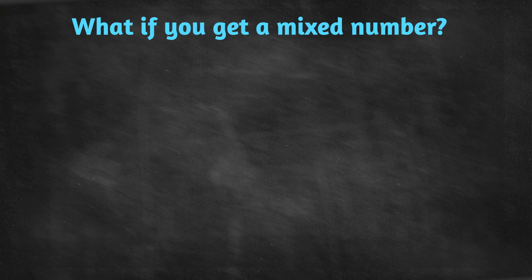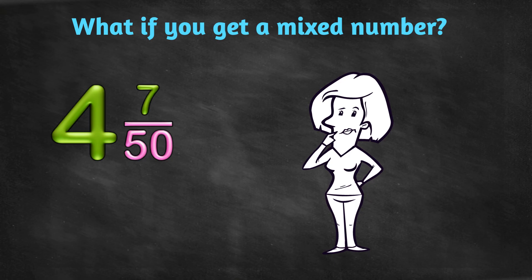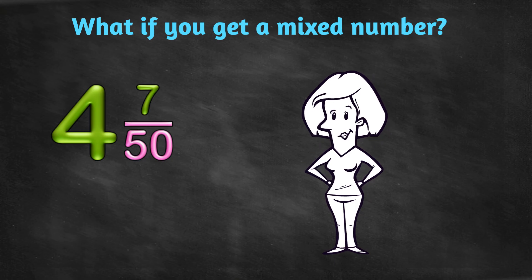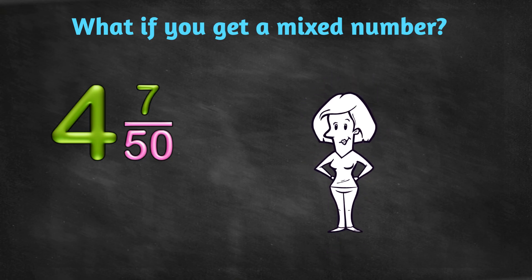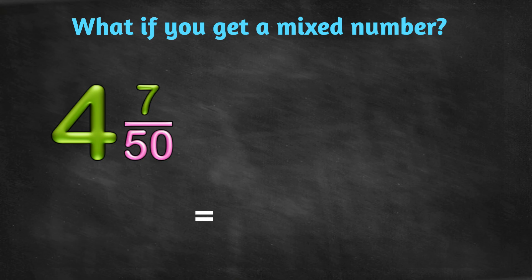And what if you get a mixed number, like this? 4 and 7 fiftieths. Is that going to be too hard for you? I don't think so! First, put the whole number part in the answer. Then do the fraction part separately.